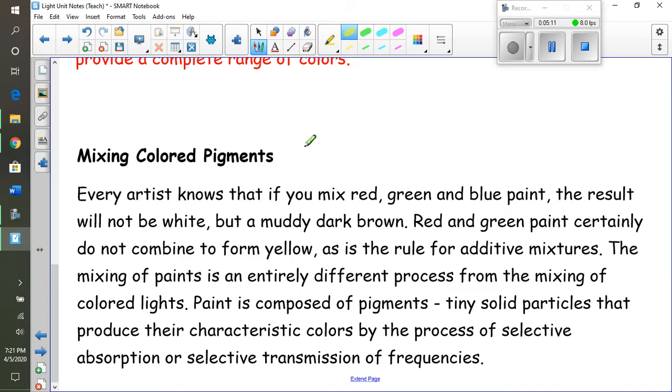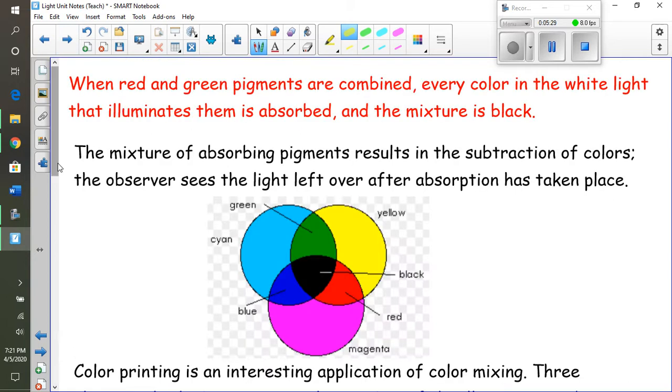The mixing of paints is an entirely different process from the mixture of colored lights. Paint is composed of pigments - tiny solid particles that produce their own characteristic color by selective absorption or transmission of frequencies. When red and green pigments are combined, every color in the white light that illuminates them is absorbed and the mixture is black.